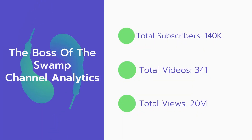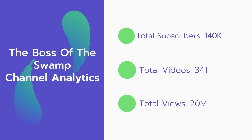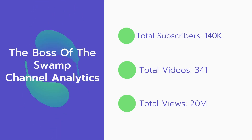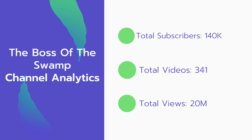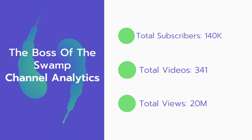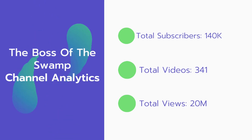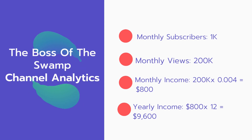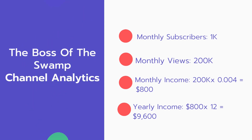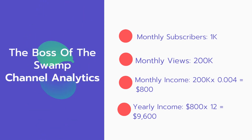Now let's go over the Boss of Swamp Channel analytics. Total subscribers: 140,000. Total videos: 341 videos. Total views: 20 million. Monthly subscribers: 1,000 subscribers every month. Monthly views: 200,000.